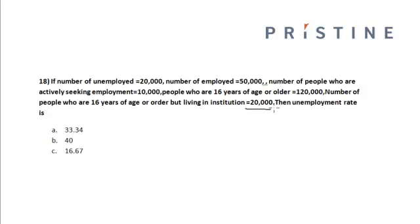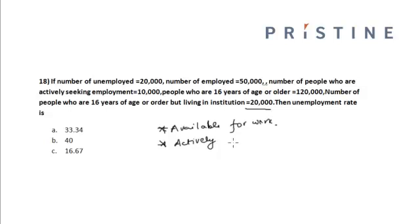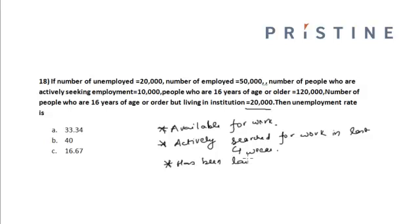Let us first define how we define a person to be unemployed. A person who is not working is considered to be unemployed if they are available for work, and has actively searched for work in the last four weeks, or has been laid off from a job and is waiting to be recalled.